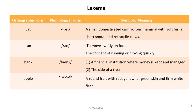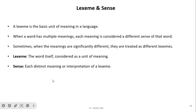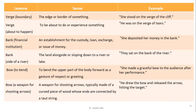The word 'bank' has meanings such as financial institution and the side of a river, pronounced /bæŋk/. A lexeme is the basic unit of meaning, and when a word has multiple meanings, each meaning is considered a different sense. Sometimes, when meanings are significantly different, they are treated as different lexemes. Each distinct meaning or interpretation of a lexeme is called a sense.